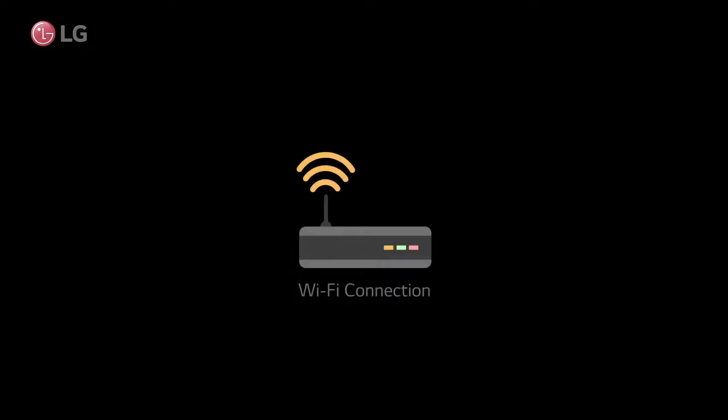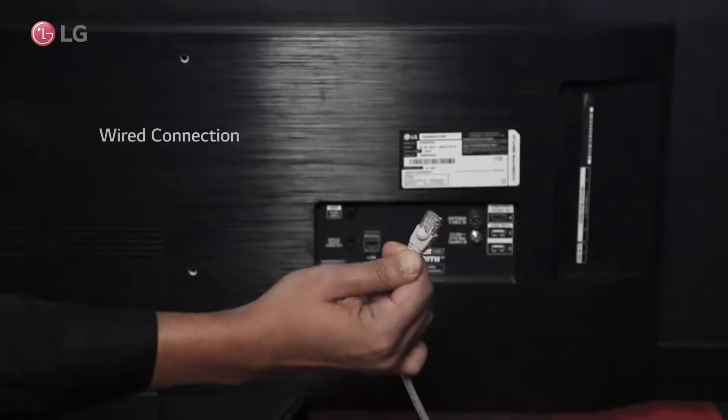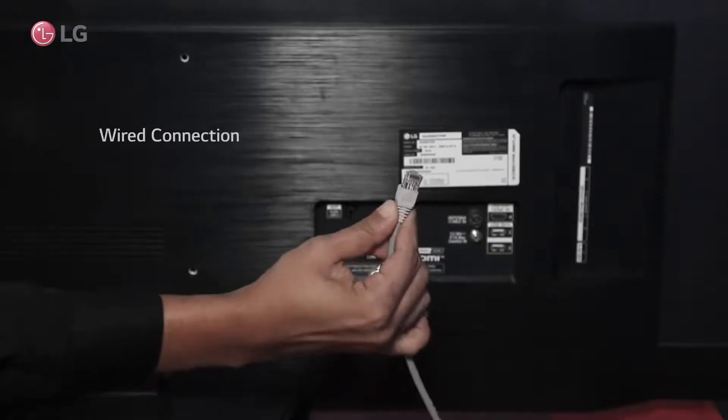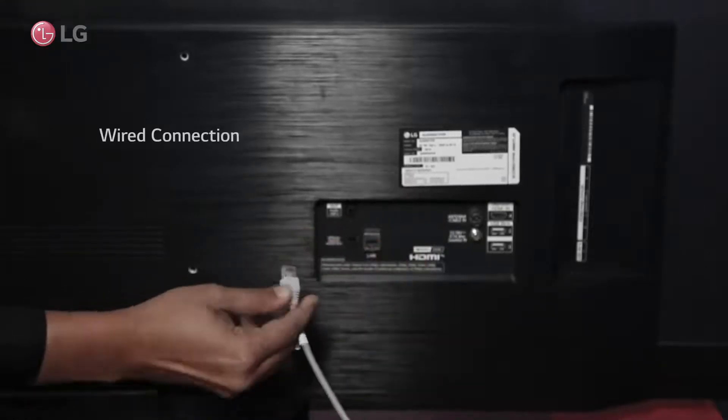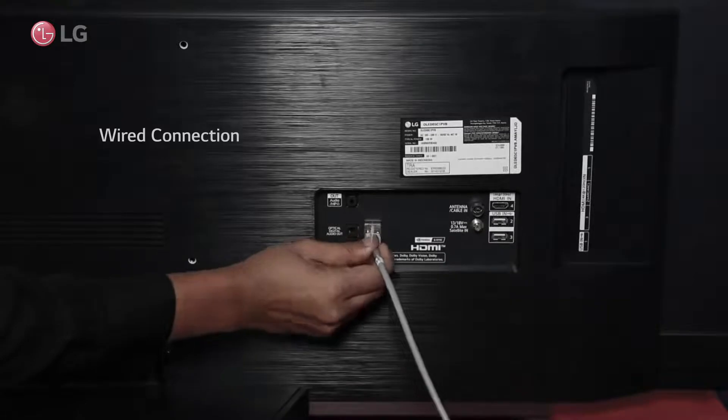There are two major ways to connect to the Internet. To use the network via a wired connection, you must connect the LAN cable directly to the TV.